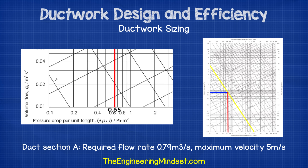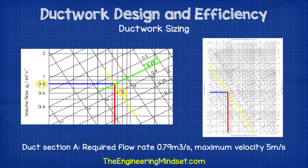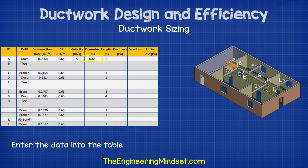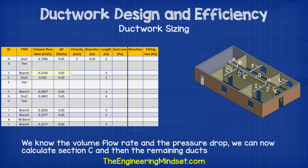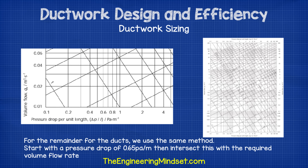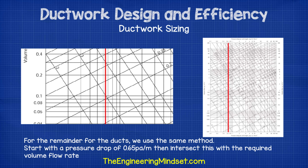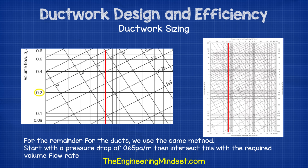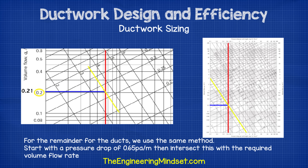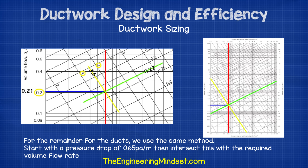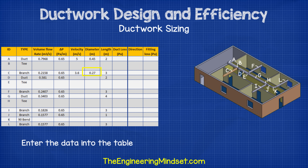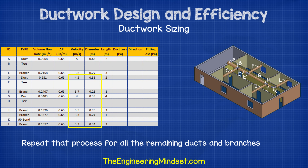We know the volume flow rates and the pressure drop, so we can now calculate the values for section C and then also the remaining ducts. On the chart, we start by drawing a line from 0.65 pascals per meter all the way up, then draw another line across from where our required volume flow rate is. For section C, we require 0.21 cubic meters per second. At this intersection, we draw a line to find the velocity — it falls between 3 and 4 meters per second, so we estimate around 3.6 meters per second. Then we draw another line on the other diagonal grid to find our duct diameter, which in this case is around 0.27 meters. So just repeat that last process for all the remaining ducts and branches until the table is complete.